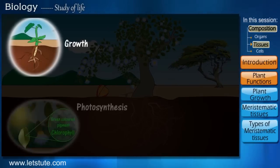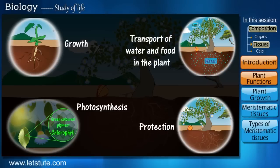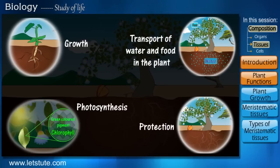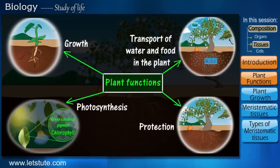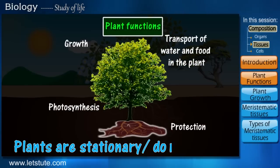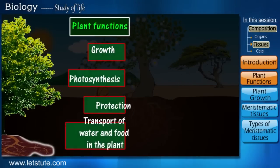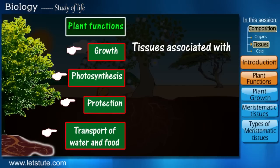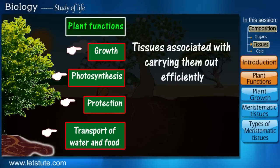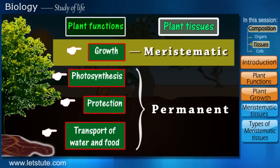Accordingly, growth followed by photosynthesis, protection from the environment, and transport of water from the soil and food from the leaves to the rest of the plant body are plant functions necessary for living. These are carried out from a single spot or the area where they grow, as plants are stationary. We shall take into consideration each of the above functions and study the tissues associated with carrying them out efficiently. Let's get to know the tissue associated with the first function of plants, which is growth.